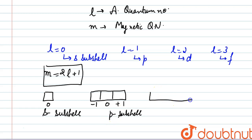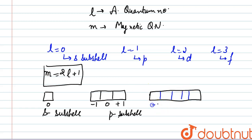For the D subshell, putting L equal to 2, we get the number of orbitals, that is the value of M, as 5. So it will be minus 2, minus 1, 0, plus 1, and plus 2.